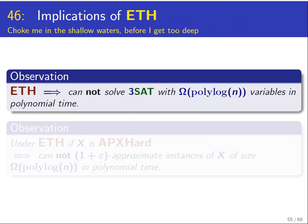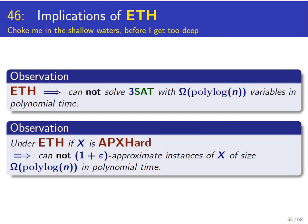To see the power of ETH, observe that it implies that you cannot even solve 3SAT for polylogarithmic size instances, namely polylogarithmic variables, in polynomial time. Not only does it say that linear size instances are hard, it tells you that even polylogarithmic instances which are significantly smaller are hard. It truly is a very strong hypothesis.